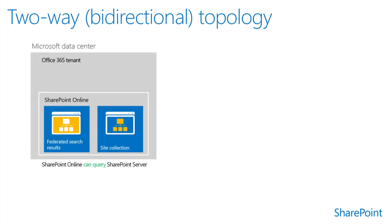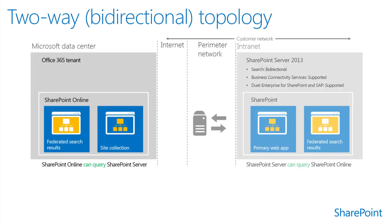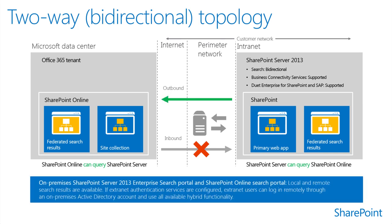A two-way topology enables bi-directional hybrid service integration between your on-premises SharePoint 2013 environment and your Office 365 tenant. For example, search can be configured to allow federated users to see both local and remote search results in either SharePoint 2013 or the SharePoint Online search portals. A two-way hybrid topology can be configured to let your users access on-premises search results from the internet, as long as they have access to the intranet through a virtual private network or direct access.